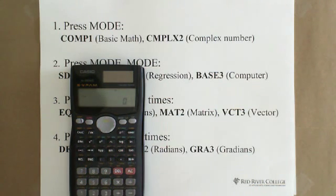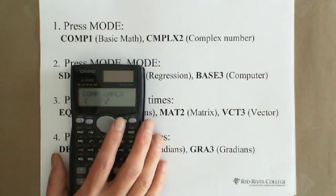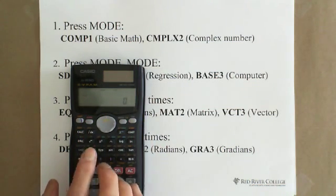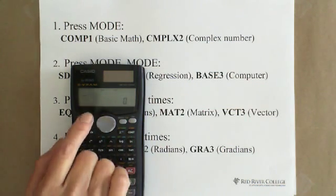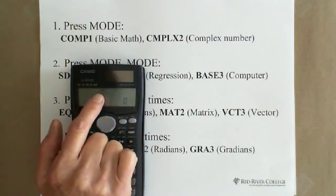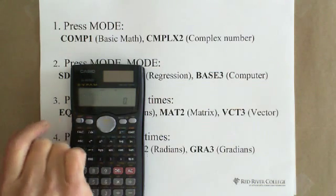Otherwise, you need to go to 2 for complex number. When you press 2, the complex CMPLX will show on the top, small letter.